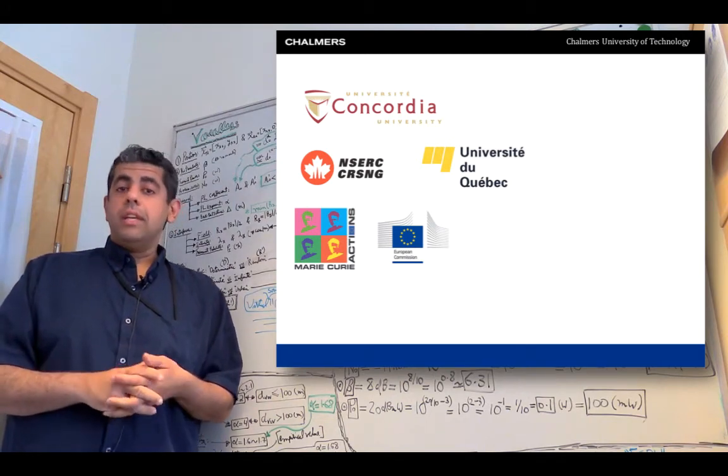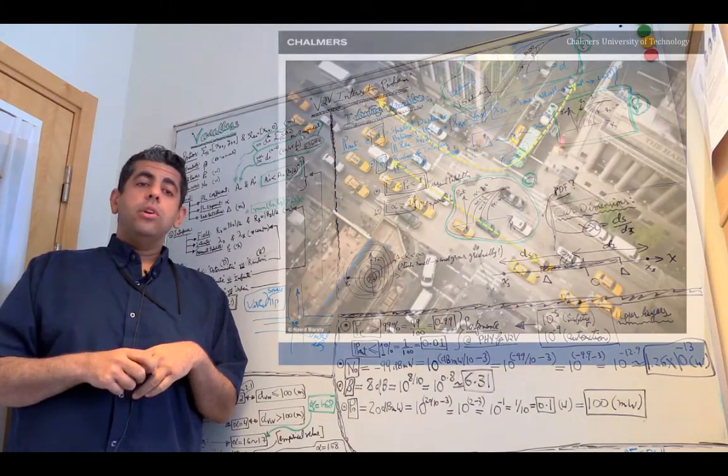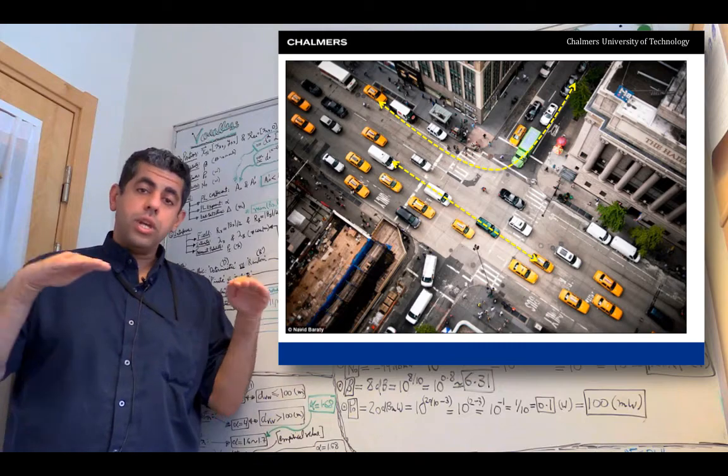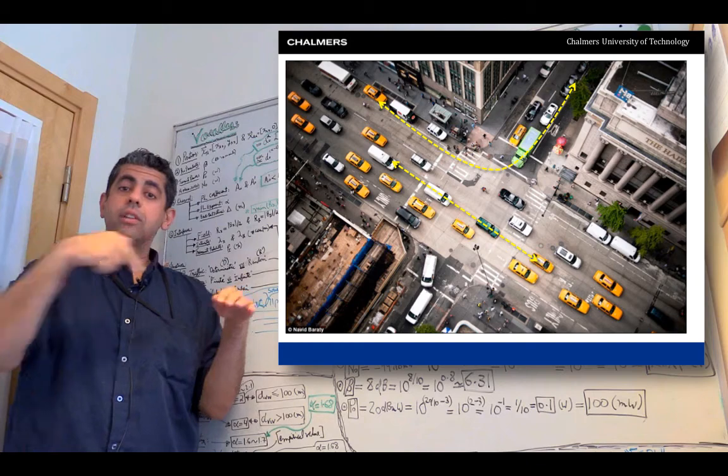The work that I'm doing currently is on V to V communication—vehicle to vehicle communication. Essentially, what we're doing is we're looking at two cars approaching an intersection in an urban environment where you have large structures